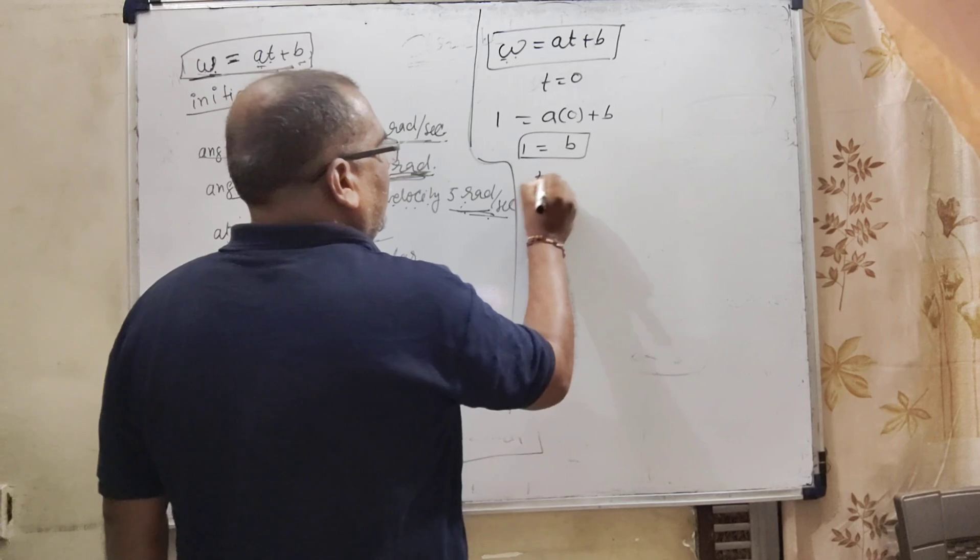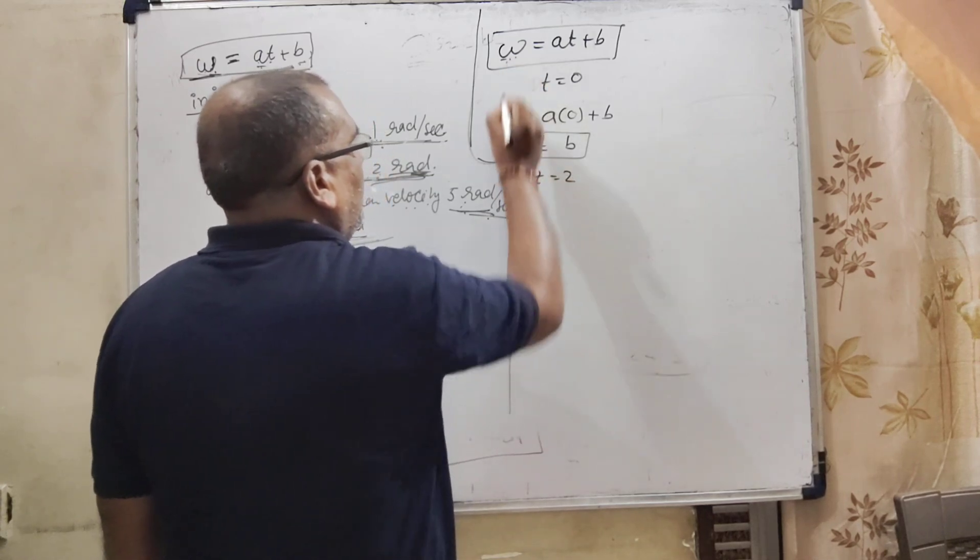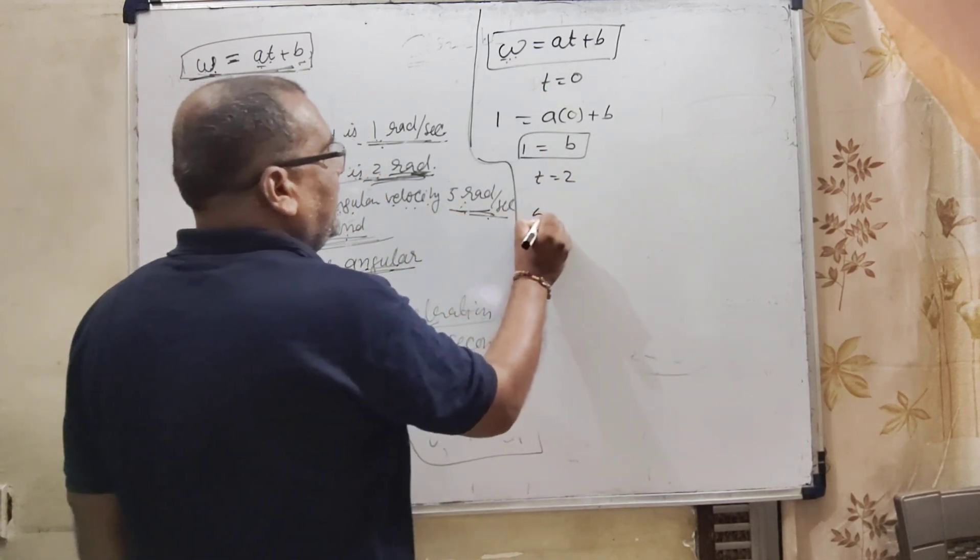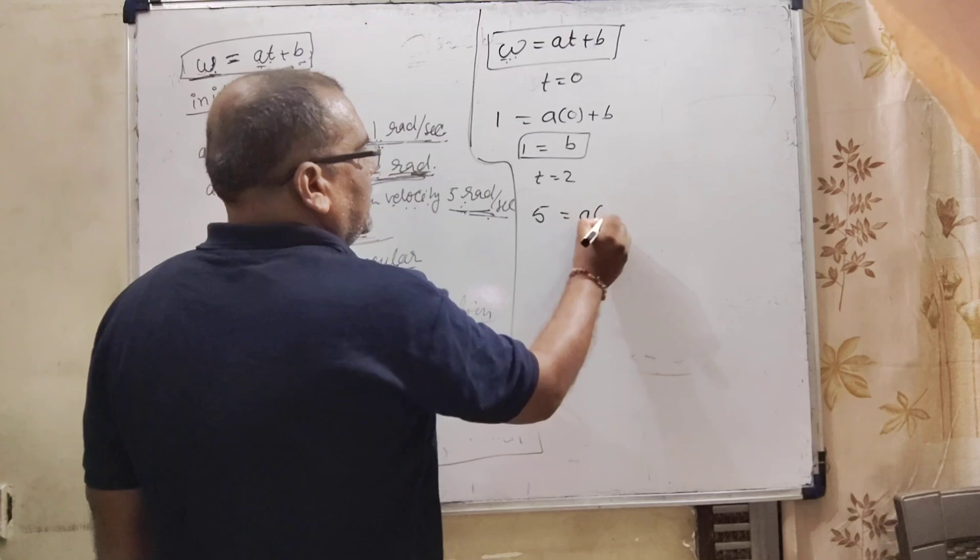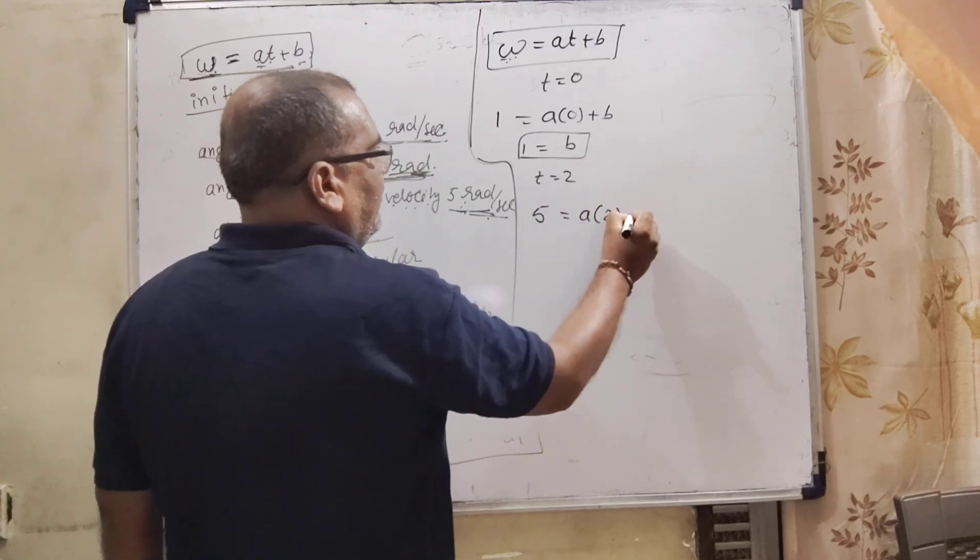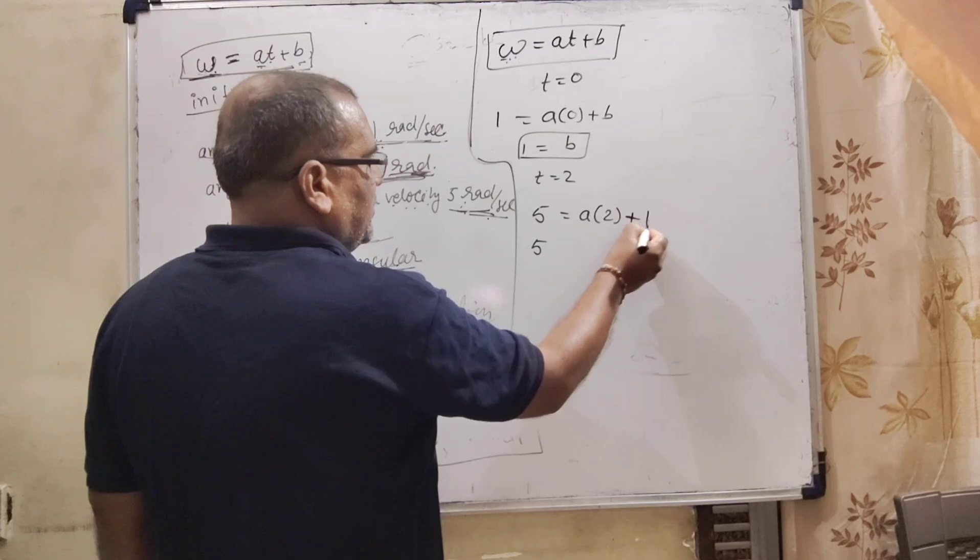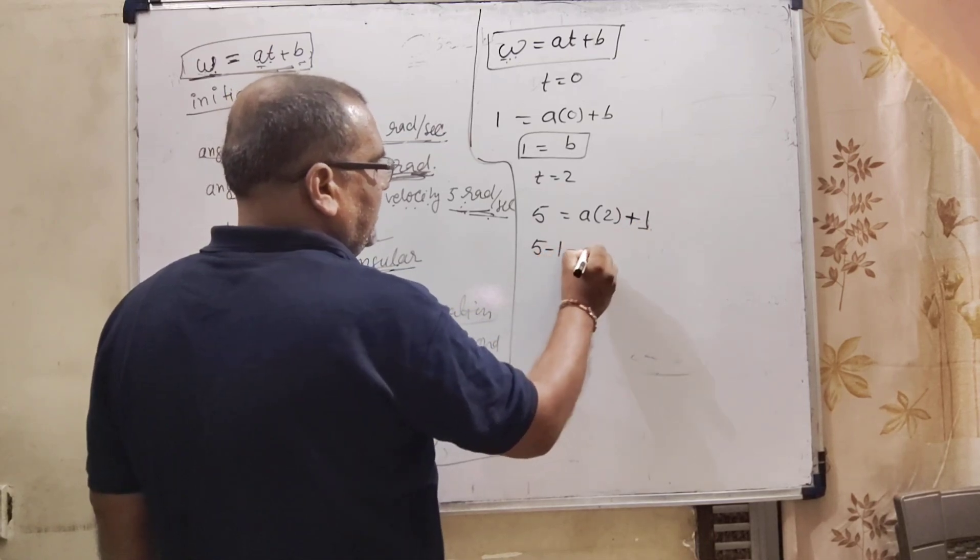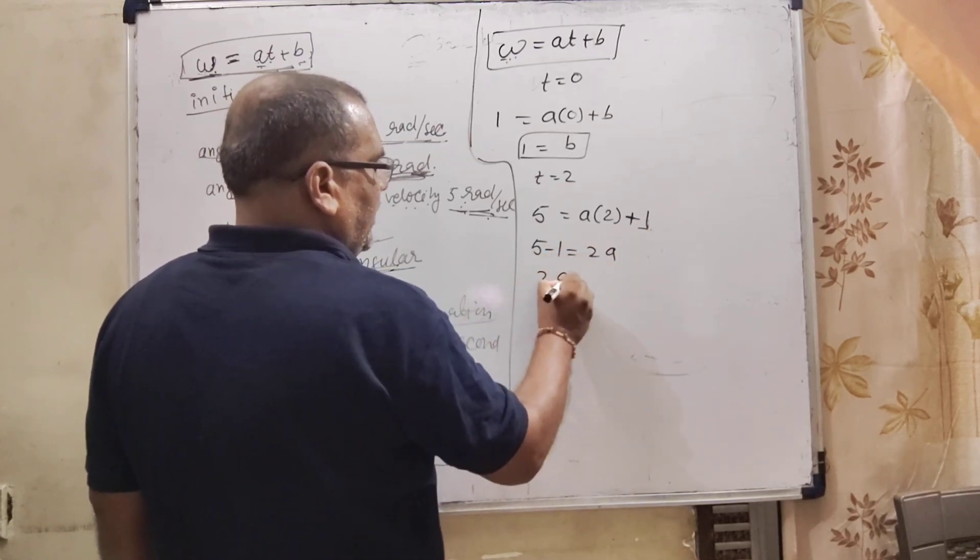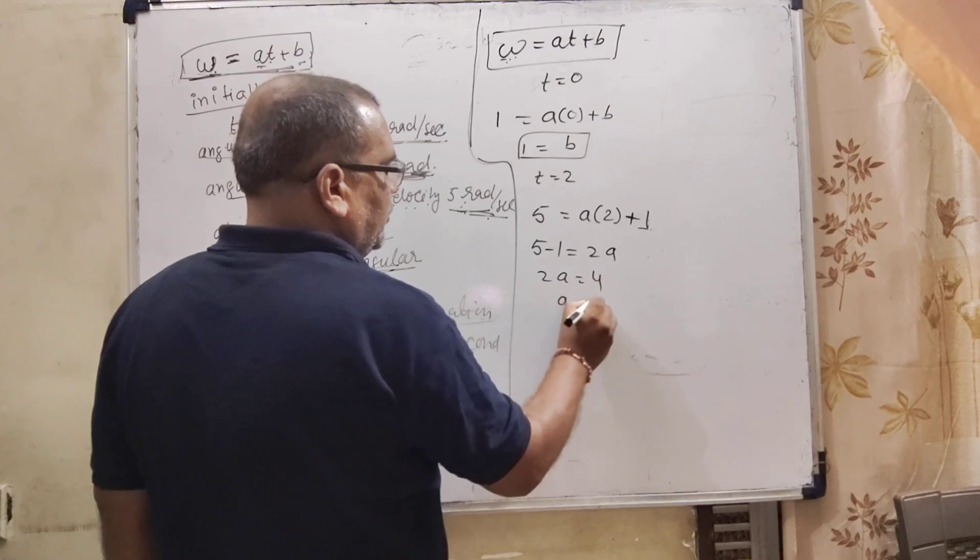Second condition we have given at t equal to 2 seconds, omega is given 5 radian per second. So 5 equals 2a plus b. And b we have already found out. So 5 minus 1 on the left side, 2a equals 4. Then a equal to 2.